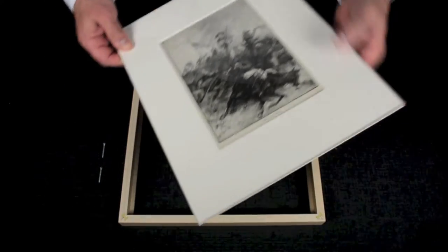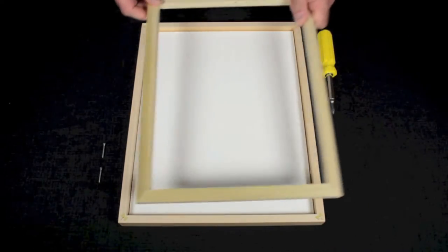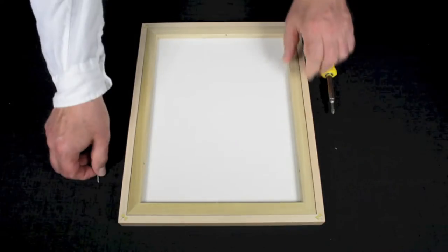With your frame placed face down on your clean work surface, place the glazing, the matted piece, and the backing board into the frame. Then replace the stringer with the two original screws.